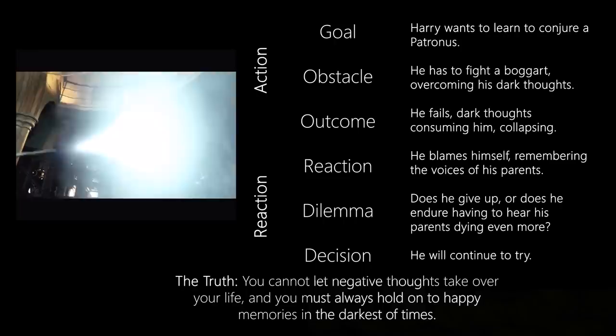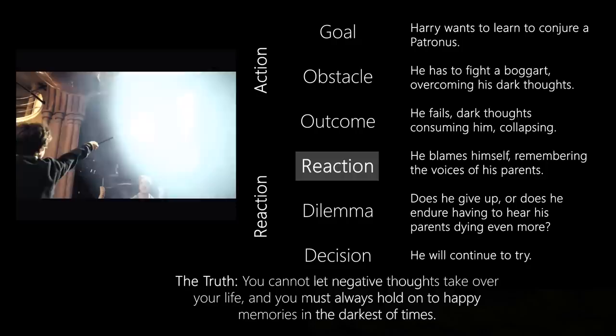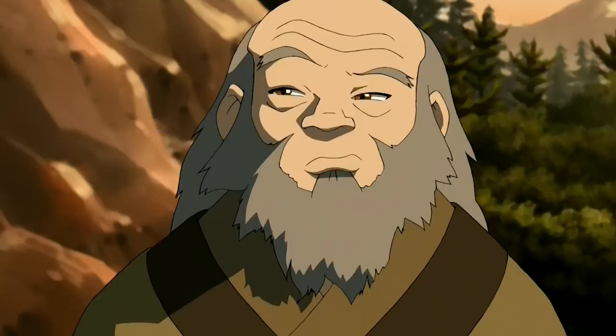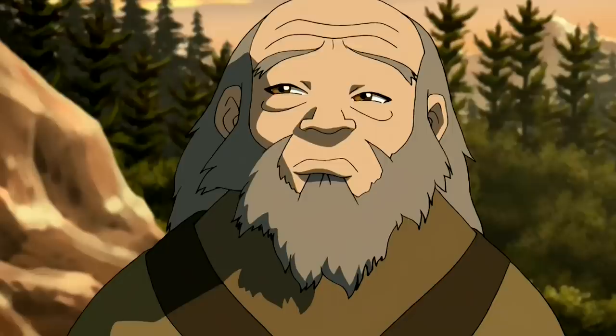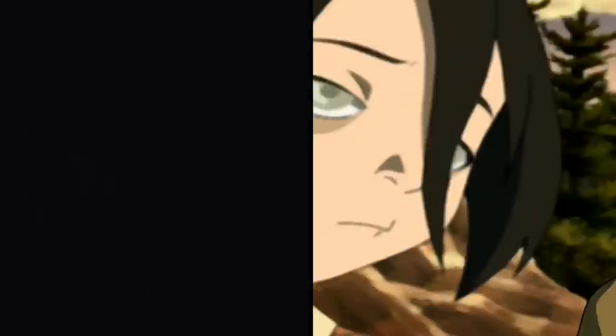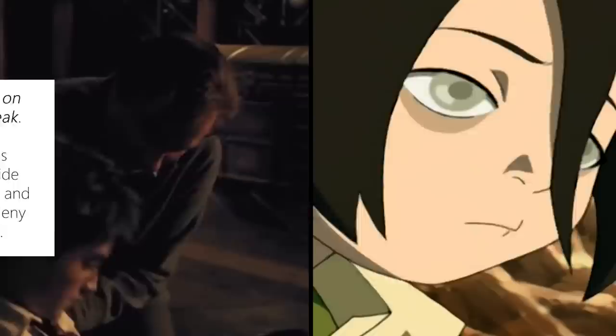In Prisoner of Azkaban, Lupin helps Harry work through the psychological reaction step, talking about how he can hear his parents' crying voices before they died. In Avatar, Iroh helps Toph work through the dilemma step, talking through how accepting the help of others does not make you weak. Each of Harry and Toph's isolation and failure shows us the consequences of them believing the lie rather than just telling us — Harry, that he doesn't hold on enough to happy memories, and Toph, that accepting help makes her weak. Show us the positives and negatives of following the mentor, and make the consequences plot-relevant rather than generic.